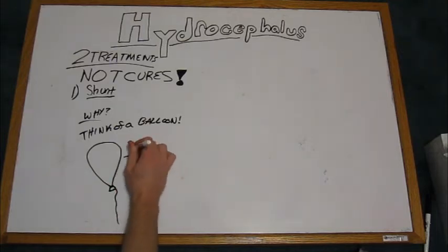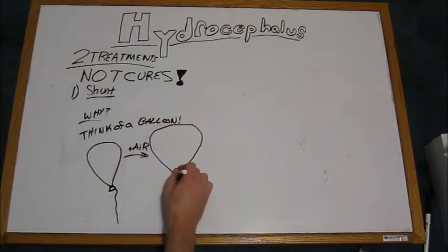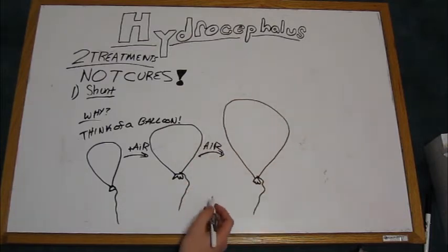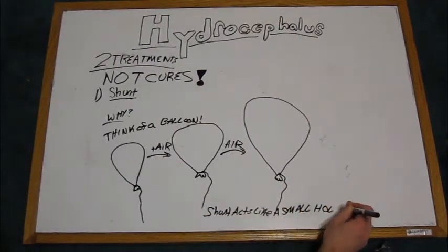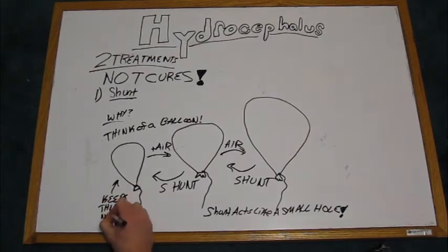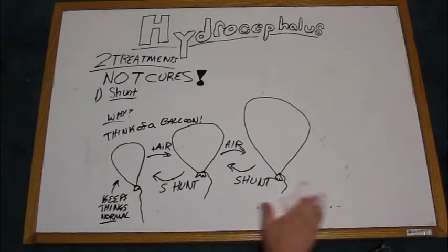Think of a balloon. As you add air, the balloon expands and fills up, much like a child's head would expand if extra cerebrospinal fluid were draining into their brain. A shunt acts like a small hole in the balloon, or in their brain, and keeps things normal.